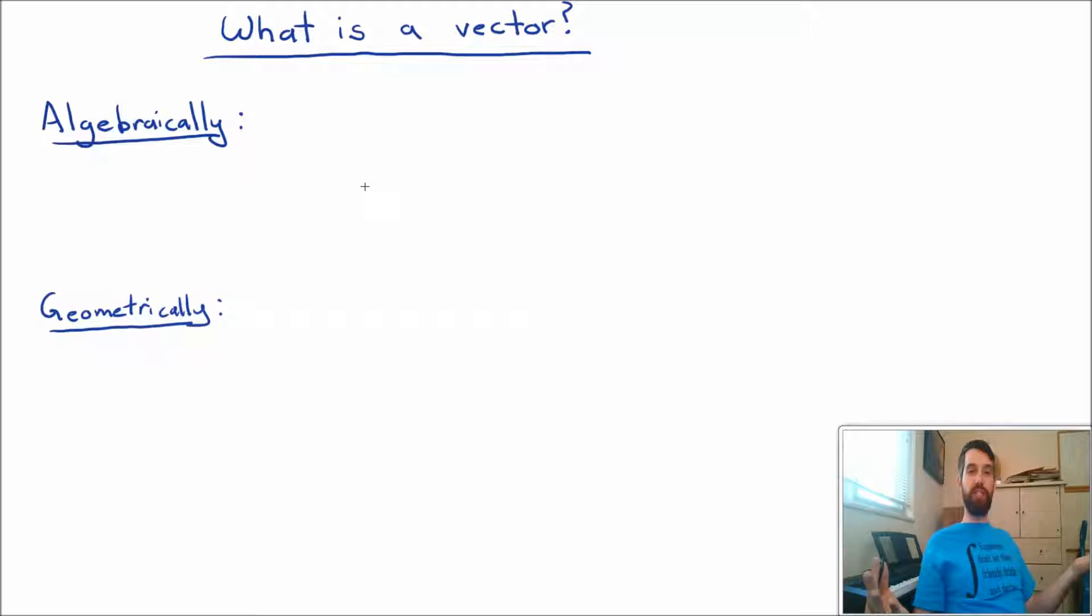Algebraically, a vector is just a list of numbers. Something like this: 1, 2, 0, 7, who knows. And I'll often come and put round brackets around them, which is the same notation I use for matrices.